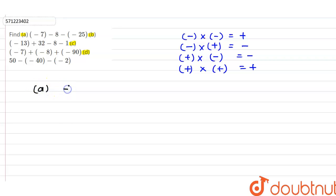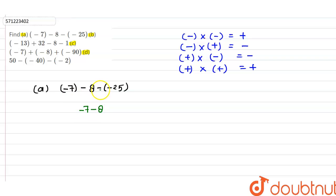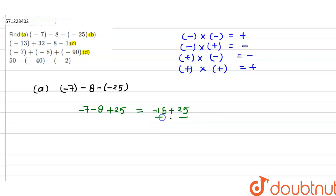The first part A is: minus 7 minus 8 and minus minus 25. When we simplify it, minus 7 remains minus 7, and here it is minus 8. When we multiply minus with minus, it becomes positive plus 25. Then minus 7 minus 8 gives minus 15, and here it is plus 25. We can see that 25 is greater than minus 15, so the value will be positive.